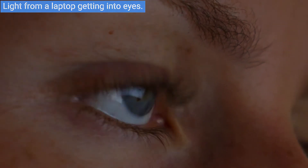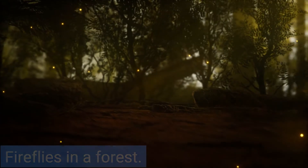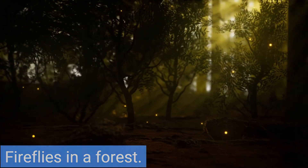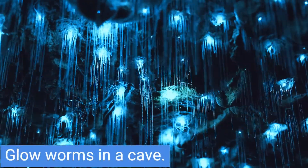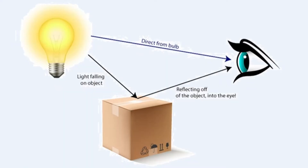Some living things such as fireflies and glowworms also produce light. Many objects like the moon, a tree, and a book cannot emit light. Objects that do not emit their own light are called non-luminous. When light hits a non-luminous object, it then bounces off and radiates in all directions from that object, which is why we can see objects around us from any angle.